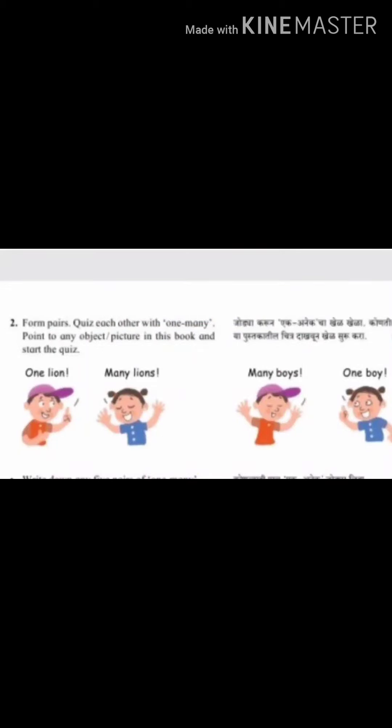Second question: from pairs with each other, point to any object or picture in the book and start the quiz. One and many means singular and plural.